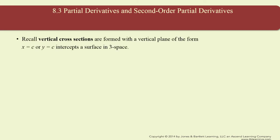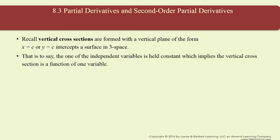Remember back in section 8-2, we briefly looked at vertical cross sections of these surfaces in space. Vertical cross sections are formed when you take a vertical plane of the form x equals c or y equals c and slice the surface in three-space. The resulting curve is called a vertical cross section. Another key idea: we keep one independent variable constant, and the vertical cross section that's left is just a function of one variable.